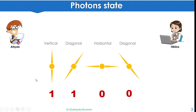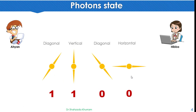So if you want to send 1, 1, 0, 0, then the corresponding photon states would be vertical, diagonal, horizontal, diagonal. These are the same four states, just replacing as needed with horizontal. So we have two states for 1 and two states for 0.